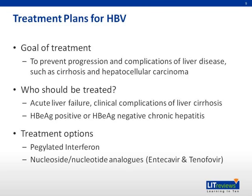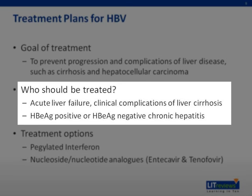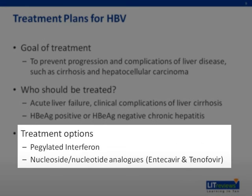Moving on to treatment for hepatitis B, the goal is to prevent progression and complications of chronic liver disease, such as cirrhosis and HCC. Groups that should be treated include acute liver failure patients, patients with clinical complications of cirrhosis, and hepatitis B envelope antigen positive or negative patients with chronic hepatitis. Treatment options include pegylated interferon, which stimulates the immune system, though it is contraindicated in decompensated disease. Other options include nucleoside or nucleotide analogs such as entecavir and tenofovir, which interrupt HBV replication to reduce viral load and hepatic inflammation.